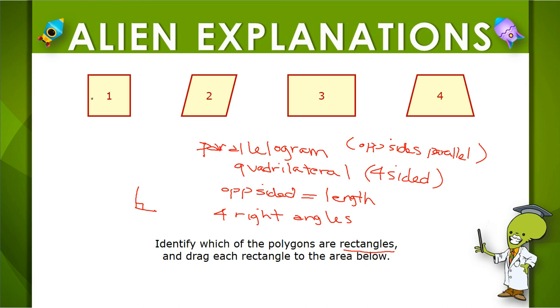So let's look at this first shape. It is a parallelogram. Its opposite sides are parallel. It's four-sided. The opposite sides are equal in length, and it has four right angles. So our first figure here is a rectangle.